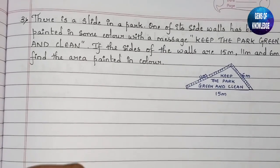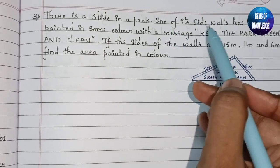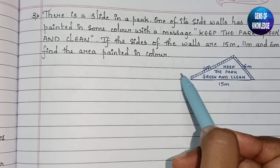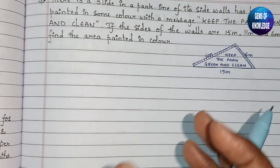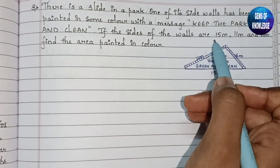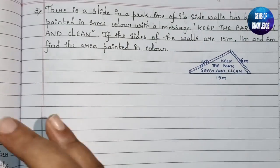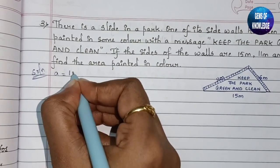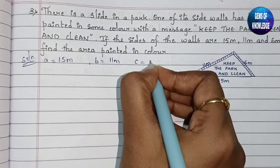Moving to the third question: there is a slide in a park, and one of its walls has been painted in color with the message 'Keep the park green and clean.' The sides of the wall are 15 meters, 11 meters, and 6 meters. We need to find the area painted in color. Let A = 15 m, B = 11 m, C = 6 m.